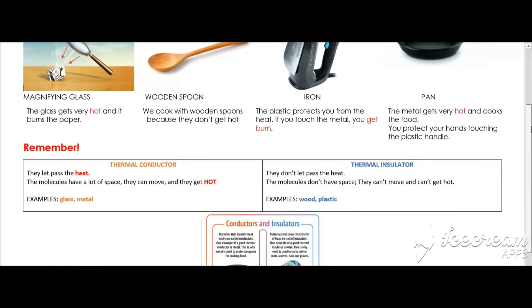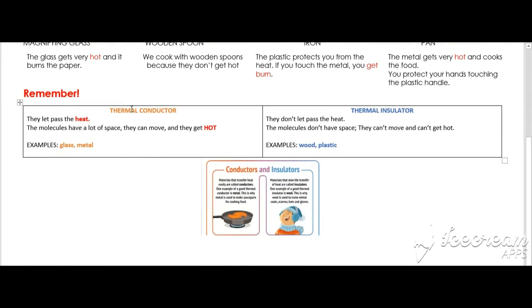Remember that thermal conductors let the heat pass — you get hot. And thermal insulators don't let the heat pass. In thermal conductor materials, the molecules have a lot of space and they can move and they get very hot. Some thermal conductors are glass and metal. For thermal insulators, the molecules don't have space, they can't move and they can't get hot — so it's cold. Some examples of thermal insulators are wood and plastic. They don't let the heat pass, the molecules don't move and so you don't get burned.